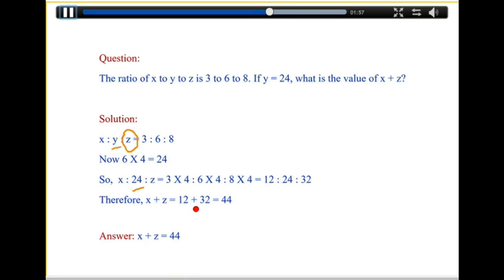So, x is to 24 is to z, we can write as 3 times 4 is to 6 times 4 is to 8 times 4. Since 6 times 4 is equal to 24, is equal to 12 is to 24 is to 32.